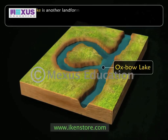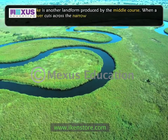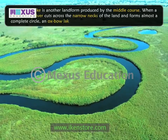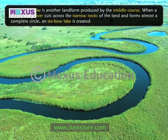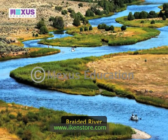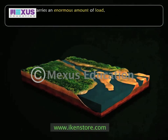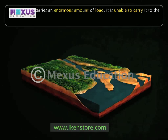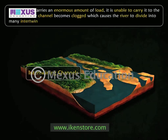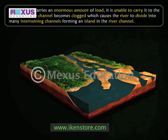Another landform produced by the middle course is the oxbow lake. When a meandering river cuts across the narrow necks of the land and forms almost a complete circle, an oxbow lake is created. Braided river is another landform created by the middle course. When a river carries an enormous amount of load, it is unable to carry it to the mouth and the channel becomes clogged, causing the river to divide into many intertwining channels forming islands in the river channel. Such a river is known as a braided river.